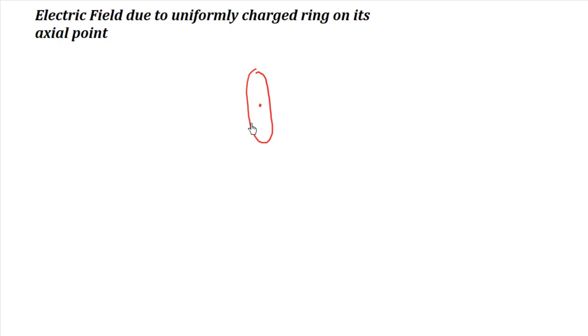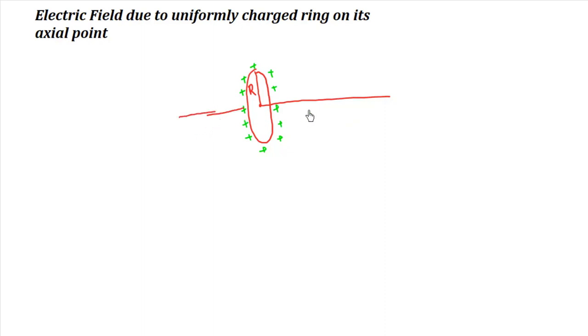We are going to find the electric field of a uniformly charged ring on its axial point. This is the ring, uniformly charged, with total charge uniformly distributed over its circumference. Its radius is R, and this is the axis on which the electric field is to be calculated. Point P is where we have to find the electric field, and P is at separation X from the center.